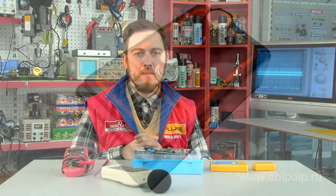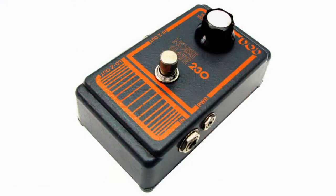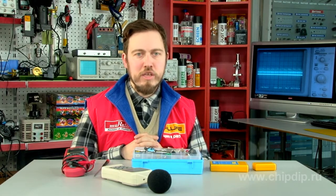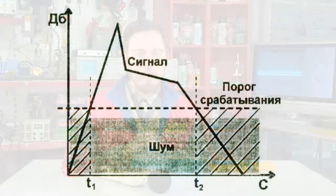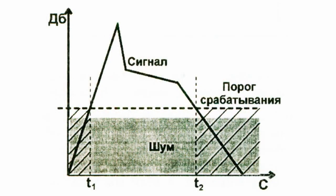A threshold squelch is a simple controller which raises the threshold level above the noise, so the noise is not perceived as a signal. A threshold squelch continually monitors the input signal level. When it determines that the signal has dropped to a certain level, it ceases to pass it to the output. When the signal increases and reaches a certain level, the device output re-opens.